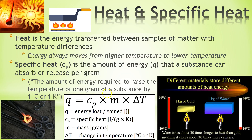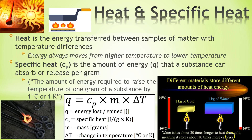Different materials will store different amounts of heat energy. One kilogram of gold is not going to hold nearly as much energy as one kilogram of water when we're talking about heat. Water takes about thirty times longer to heat than gold, meaning it stores thirty times as much energy in the form of calories or joules. So water has a much higher specific heat than gold. Gold will heat up and cool down rapidly; water, very, very slowly. Think of it as almost like thermal inertia.